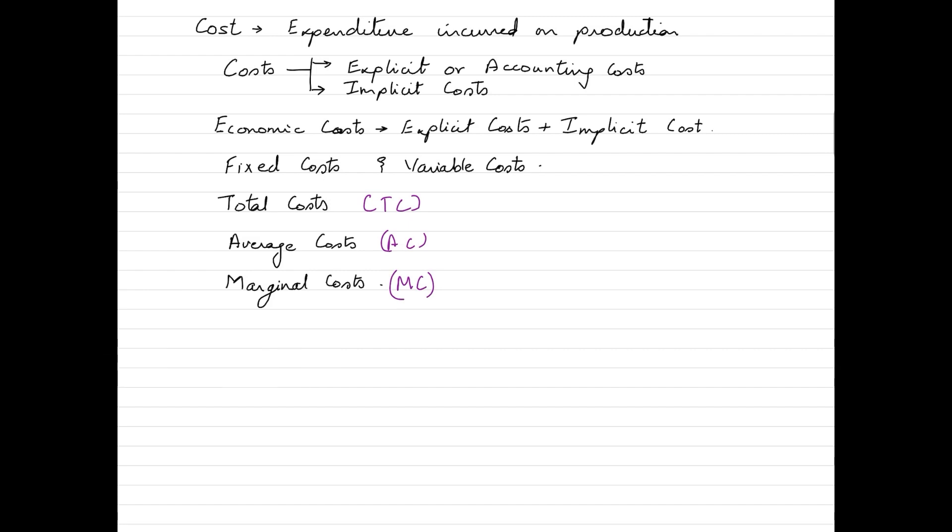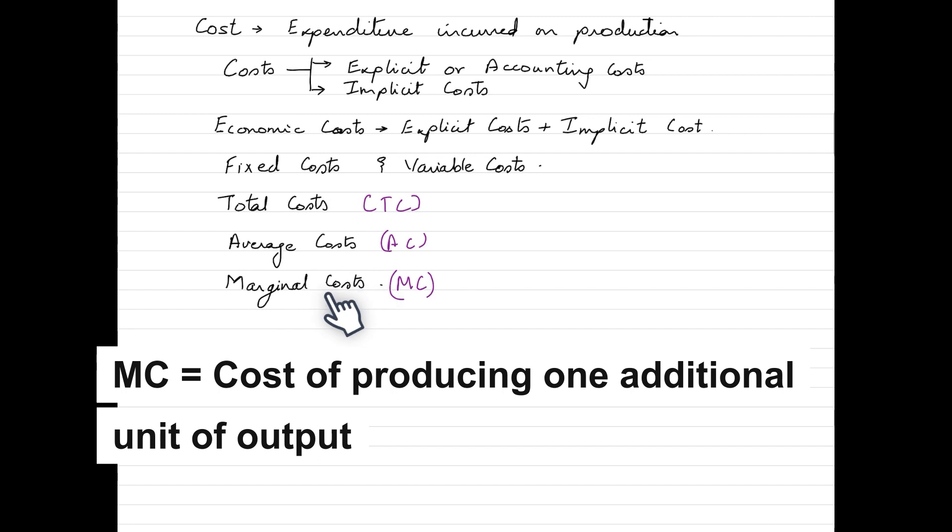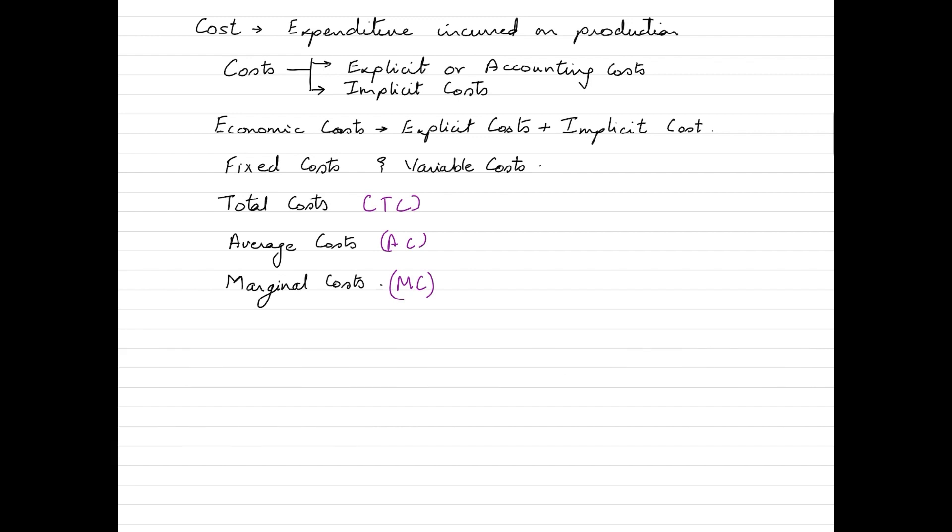When we talk about marginal costs, marginal costs basically represent the cost that is incurred by producing one additional unit of output. For example, if the firm is producing 100 units of pens and it is producing the 101st unit, the cost incurred on that 101st unit of pen is your marginal cost.